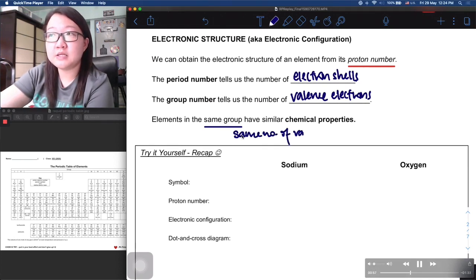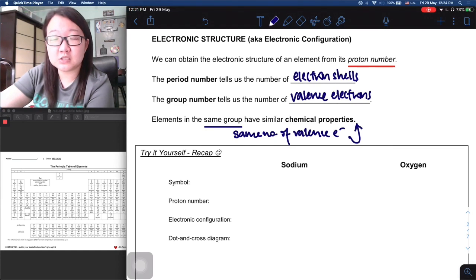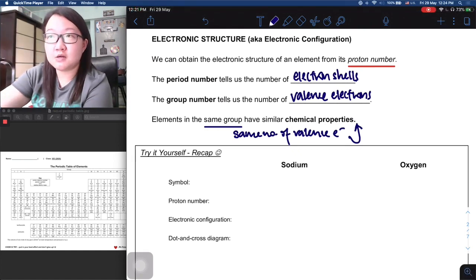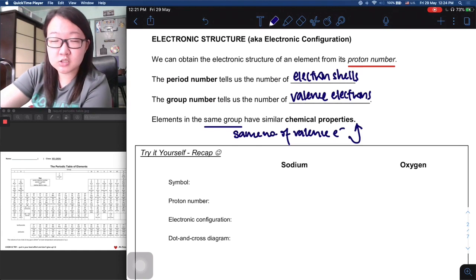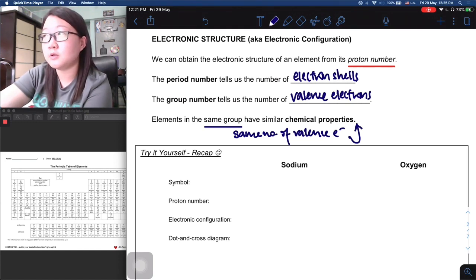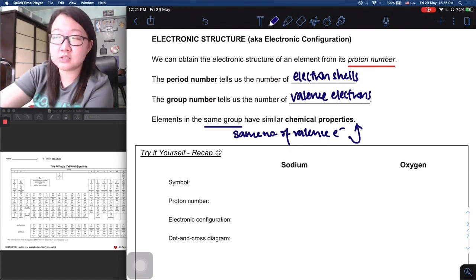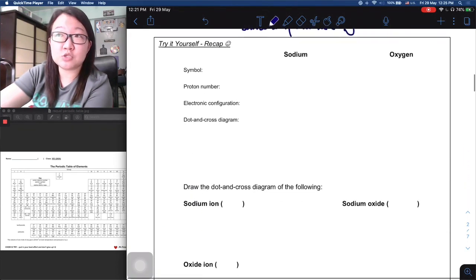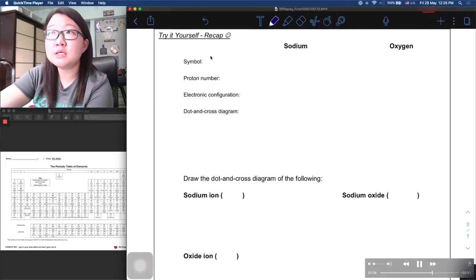Elements in the same group have the same number of valence electrons. This helps us predict the trend that they will therefore have similar chemical properties. Because for chemistry, when we talk about chemical reactions, generally we are just talking about the gaining as well as the losing of electrons. This will be more obvious when you go on to subsequent topics, more so in secondary form. Because your valence electrons are the outermost electrons, they are the easiest to lose and gain. At this moment, I need you to just take a pause in this video and try this out yourself as a recap.